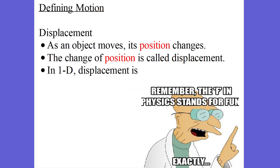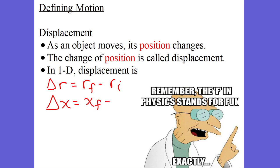This position can then be related to its displacement. As an object moves, its position changes, and that change of position is what we call displacement. In one-dimensional displacement, we can take a look at our change in our r vector: r final minus r initial. In one-dimensional motion, we'll say the change in its position — the change in its x, which we call its displacement — is equal to x final minus x initial.